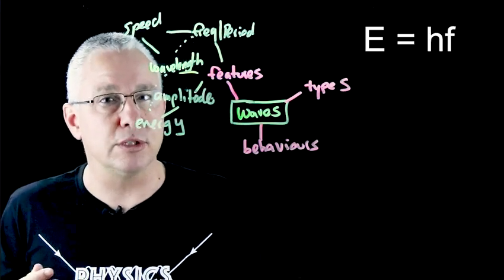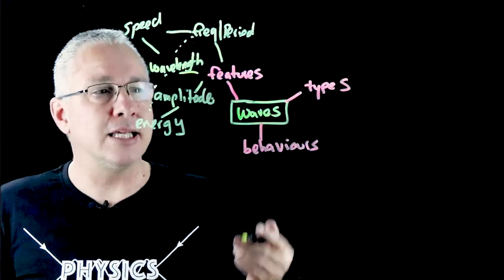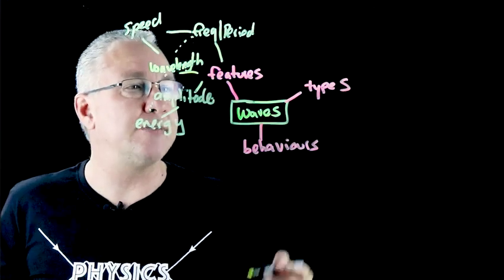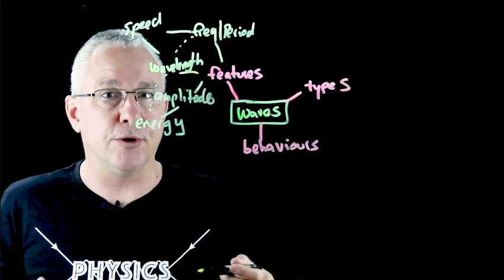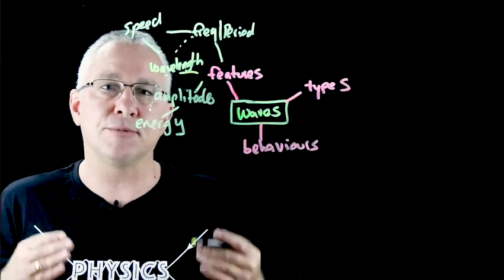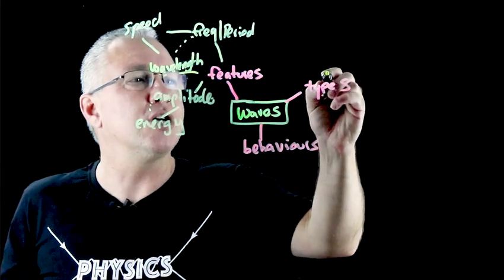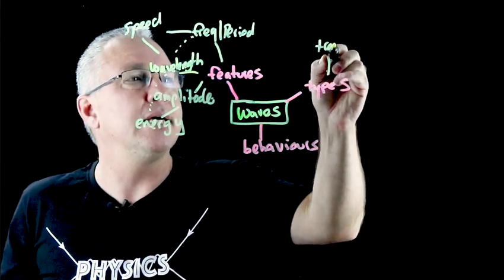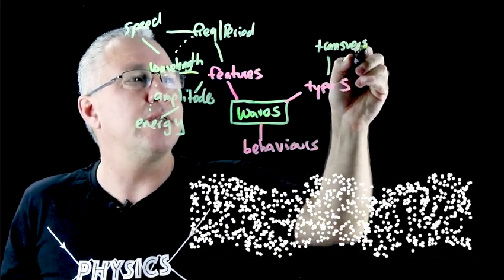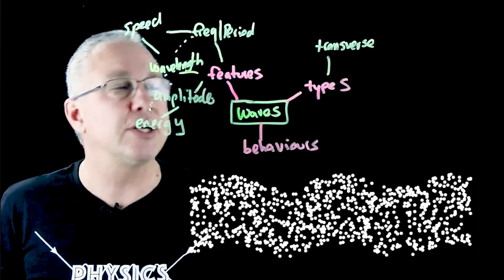But later on you might also discover that the frequency itself actually is related to its energy, and that relates specifically to the quantum nature of waves. Now let's have a look at the types of waves. Generally speaking, most texts refer to three types of waves, though sometimes there's a bit of an overlap with another type of wave. The most common type of wave that we often talk about is the transverse wave, where the particles are moving perpendicular to the direction of the wave.